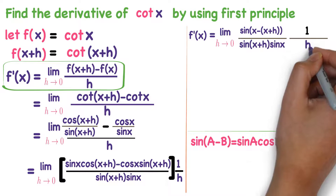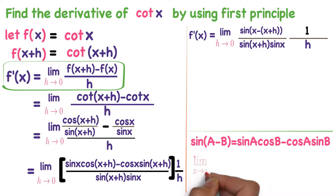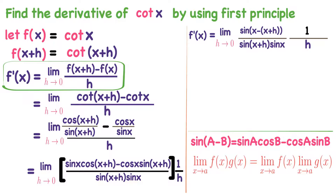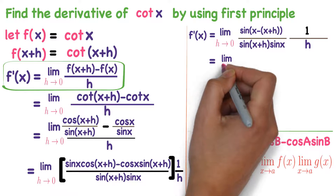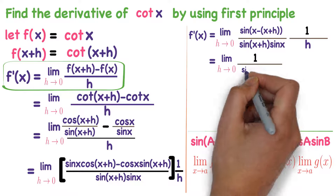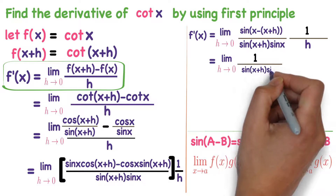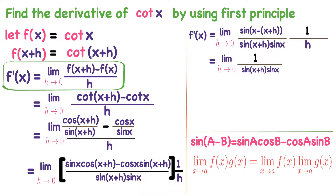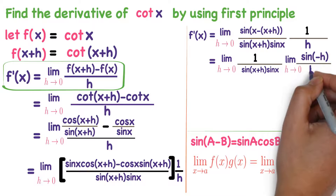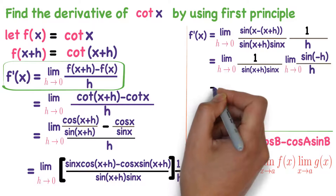You can understand this easily from the previous step. We know the formula: limit x tends to a of f of x into g of x equals limit x tends to a of f of x, multiplied by limit x tends to a of g of x. Limit h tends to 0 — I write the first function as 1 divided by sin of x plus h into sin x, and limit h tends to 0, and observe the numerator: x and x will cancel, giving sin of minus h divided by h.